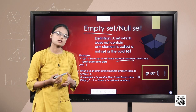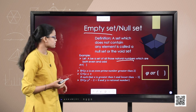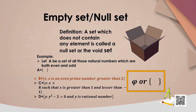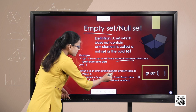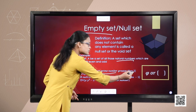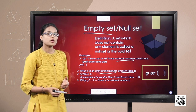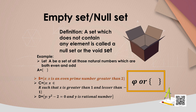Let us take more examples. Set B consists of all those numbers which are even prime numbers but greater than 2. We know that there is no even prime number which is greater than 2 — they are all odd. Hence, the set B is an empty set.